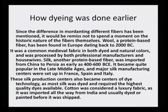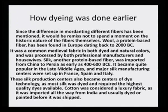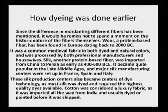Wool was a common medieval fabric in both dyed and natural colors, processed by both professional manufacturers and housewives. Silk, another protein-based fiber, was imported from China to Persia as early as 400 to 600 BC. It became quite popular in the late Middle Ages and major silk manufacturing centers were set up in France, Spain and Italy. These silk production centers also became the centers of dye technology as most silk was dyed and required the highest quality dyes available.